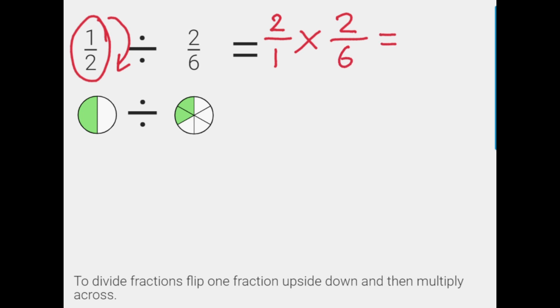We're multiplying across the top — two times two is four. And across our bottom, our denominators, one times six is six.